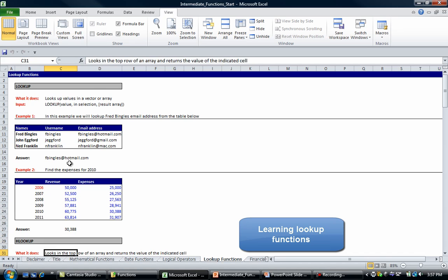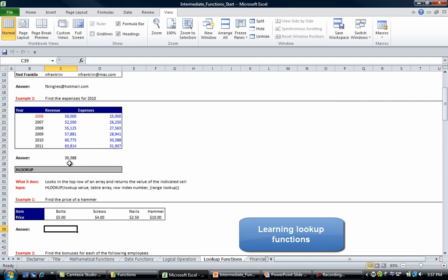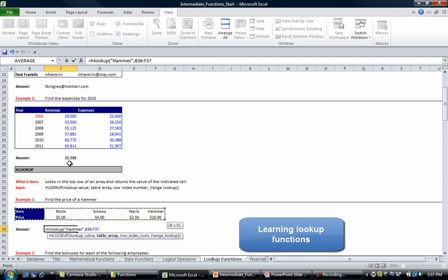So let's look at some examples. The first example says find the price of a hammer. So all we're going to do is HLOOKUP and say hammer in table array from B36 to F37, comma row index number, so this is the result index number or the row of the result which is obviously the second row of that matrix.